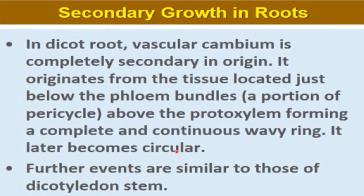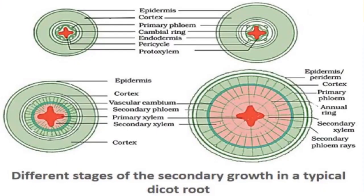This vascular cambium ring starts as wavy and later becomes circular — that is the key difference. In secondary growth of stems, vascular cambium was present in the form of patches and later formed a complete layer. Further events in root secondary growth are similar to those of dicot stems: after formation of the vascular cambium ring, secondary xylem forms on the inner side and secondary phloem on the outer side.